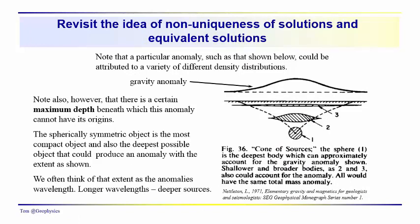Equivalent solutions are acceptable answers to a problem which give you pretty much the same answer within a certain amount of allowable error. Non-uniqueness solutions are perhaps a little bit different in the sense that here we have our sphere producing this anomaly. We could estimate the depth of the sphere by looking at the half-max point and multiplying that by 1.305.